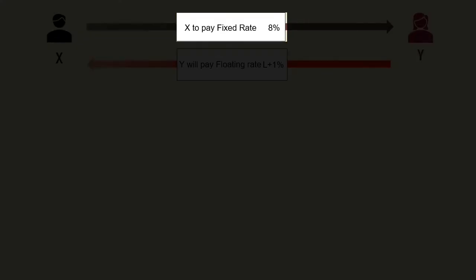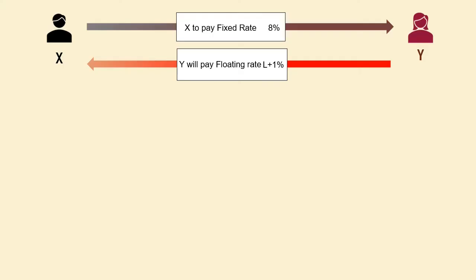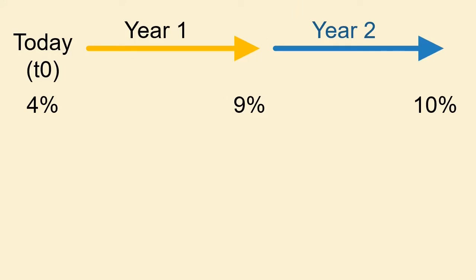Every year, X will pay a fixed rate of interest at 8% to Y on $100 million, and Y in turn will pay a floating rate at LIBOR plus 1% on $100 million to X. Let us presume that LIBOR today at T0 is 4%, at the end of year 1 LIBOR is determined at 9%, and it is 10% at the end of year 2. The LIBOR applicable for year 1 will be the LIBOR determined at T0, and the LIBOR applicable for year 2 will be the LIBOR determined at the beginning of year 2. This is the critical point: the LIBOR for a particular period is determined at the beginning of that period.